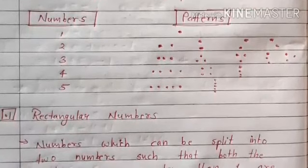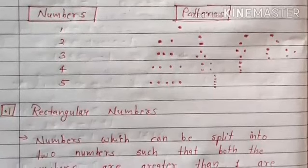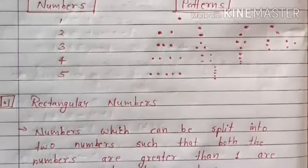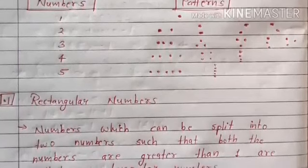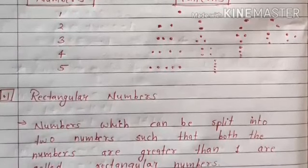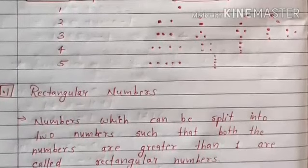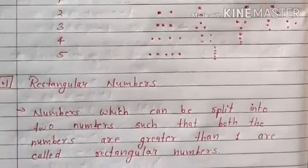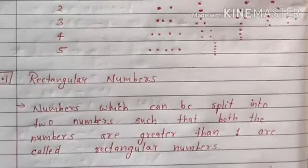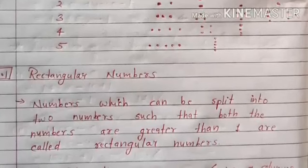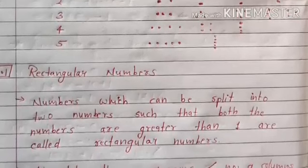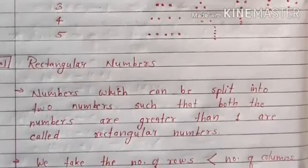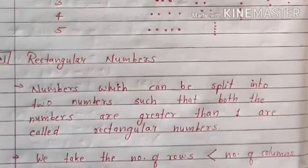First, rectangular numbers. Rectangle वो होता है जिसके length और width अलग-अलग होते हैं। The number which can be split into two numbers such that both numbers are greater than one are called rectangular numbers. ऐसे number जिसको दो भागों में तोड़ने पर दोनों parts one से ज़्यादा आएं, वो rectangular numbers होते हैं।